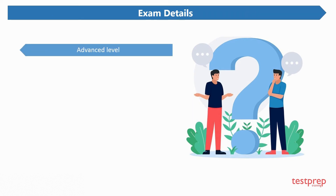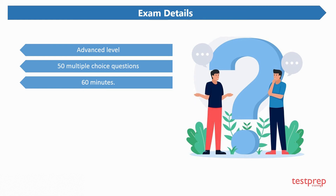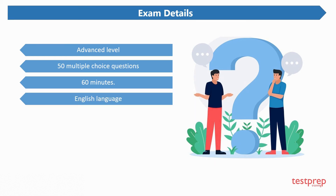Regarding exam details: the Blue Prism Professional Developer certification is the advanced level exam in the entire Blue Prism developer hierarchy. There will be 50 multiple choice questions that must be completed in a time frame of 60 minutes. The exam is available only in the English language, so make sure you are well versed with the language.